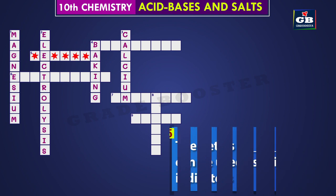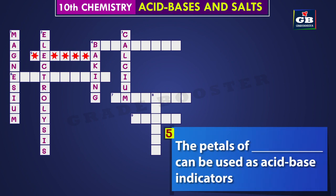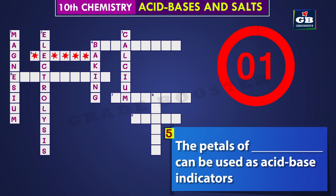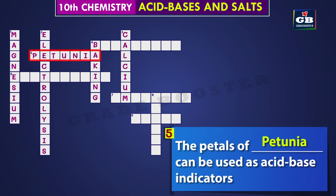Let's see the next one — five across. The petals of dash can be used as an acid-base indicator. Did you get it? The answer is petunia. The petals of petunia can be used as an acid-base indicator.